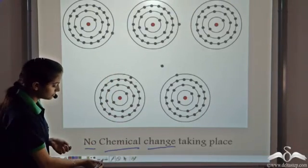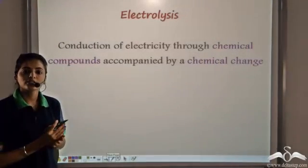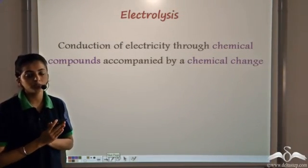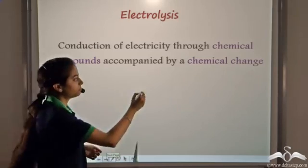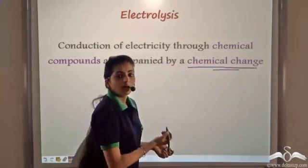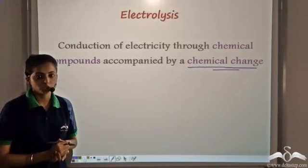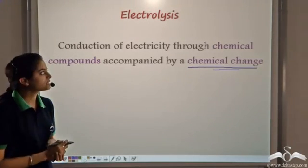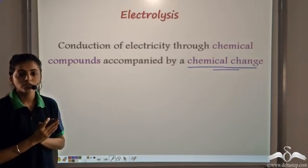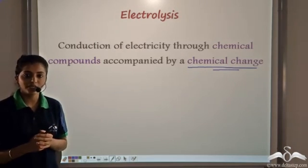But in chemistry, certain chemical compounds allow the passage of electricity through them, but this is always accompanied by a chemical change. And this process is known as electrolysis. So electrolysis is the conduction of electricity through chemical compounds which is always accompanied by a chemical change.